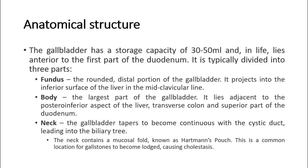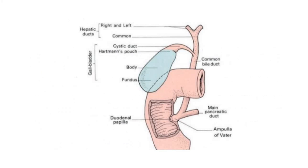The body is the largest part of the gallbladder. It lies adjacent to the posterior inferior aspect of the liver, transverse colon, and superior part of the duodenum. The neck is where the gallbladder tapers to become continuous with the cystic duct, leading into the biliary tree. The neck contains a mucosal fold known as Hartman's pouch. This is a common location for gallstones to become lodged, causing cholestasis.